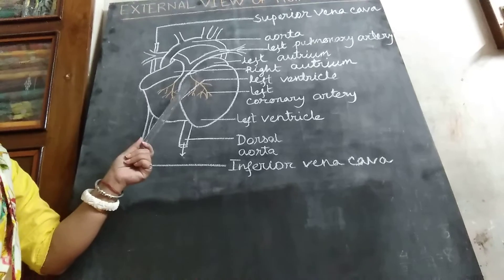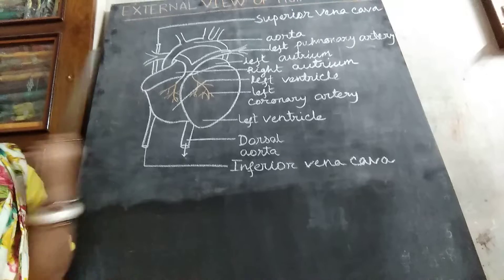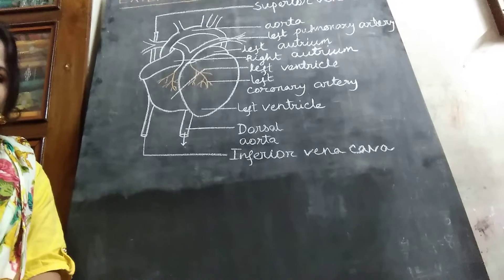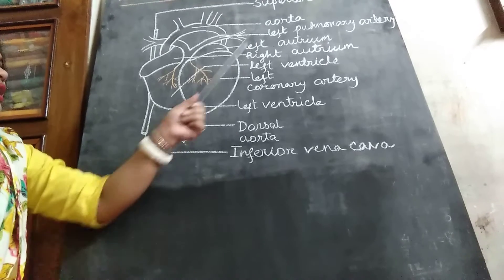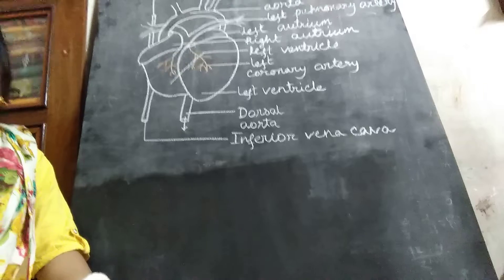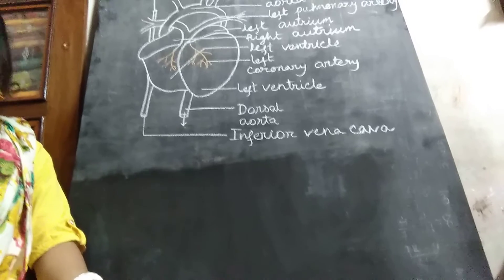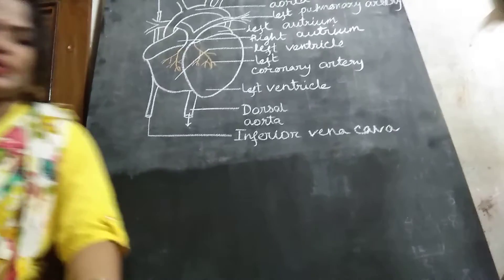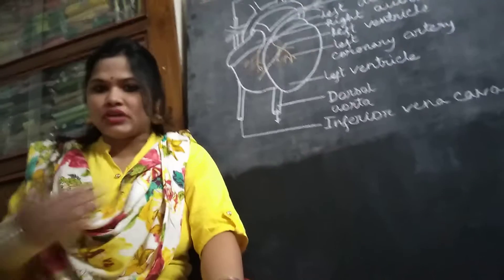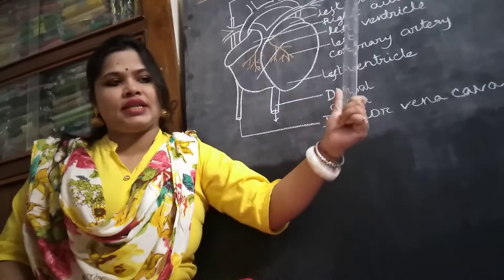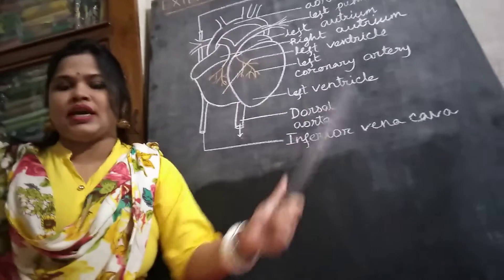First, see which one is my left and right hand side. I am standing in front of the board, so this is my left hand side and this is my right hand side. I have pointed out which one is left and which one is right accordingly.